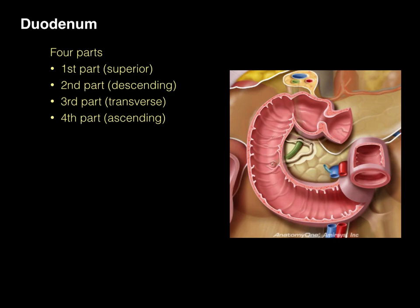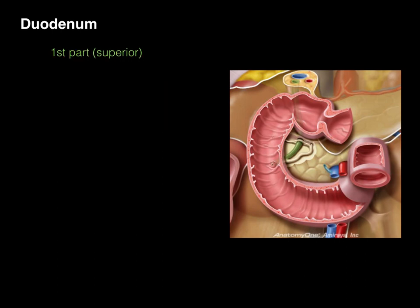The first part also has another name, because anatomists love to give more than one name to structures. The first part is also called superior; the second part, descending; the third part, transverse; and the fourth part, ascending. The first part is the part associated with the end of the stomach — P stands for pylorus — and the first part of the duodenum, also called the superior part, is the highest area.